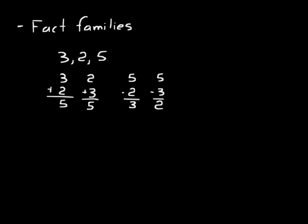To understand fact families better, let's think about an addition fact that would not work using these three numbers. You couldn't say 5 plus 3 is 8 because the 8 is not one of the three numbers in the fact family. That combination wouldn't work. Likewise, a subtraction fact that wouldn't work: you couldn't do 3 minus 2 because that equals 1, and 1 is not in the fact family.